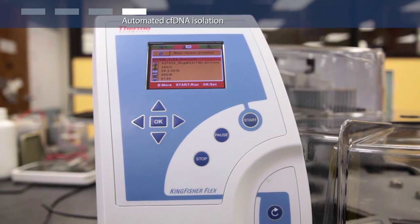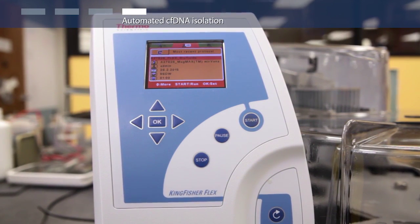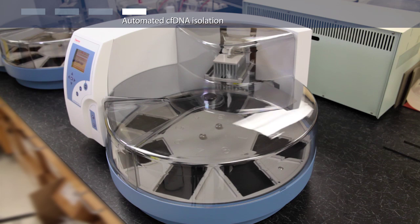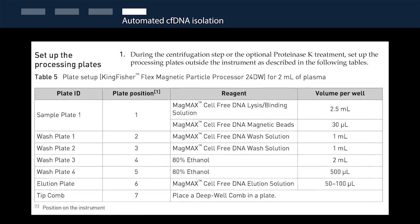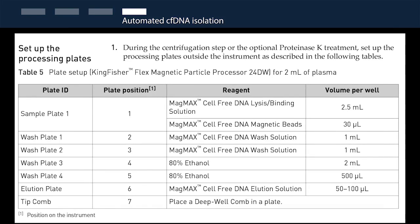Circulating cell-free DNA isolation may be automated using the Kingfisher Flex or the Kingfisher Duo Magnetic Particle Processor. Use the table provided in the product manual to prepare the processing plates.